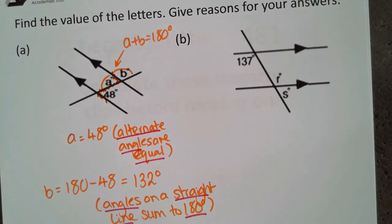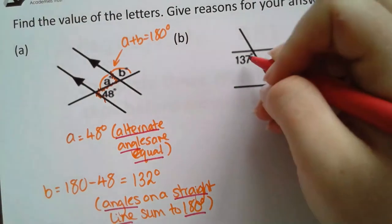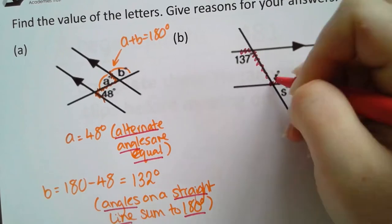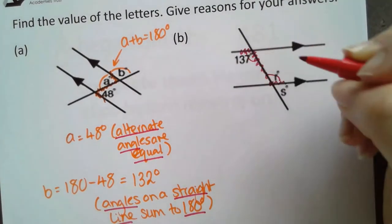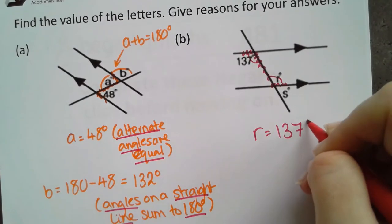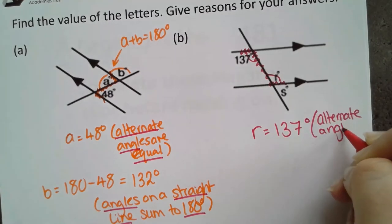Let's try the next. Again, we're in a very similar position to last time in that if I draw my z in, I can see an alternate angle here and here. So r here is 137 degrees, again because alternate angles are equal.